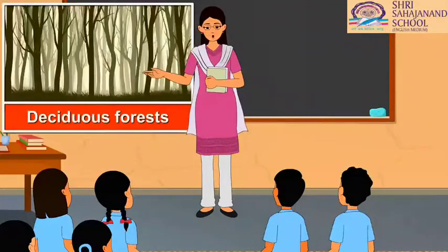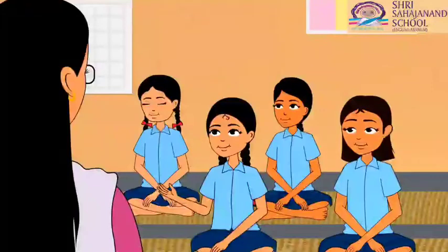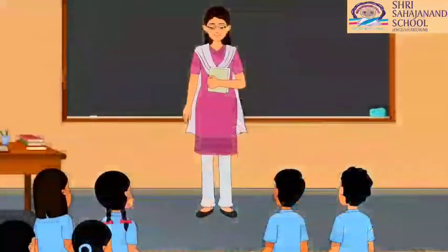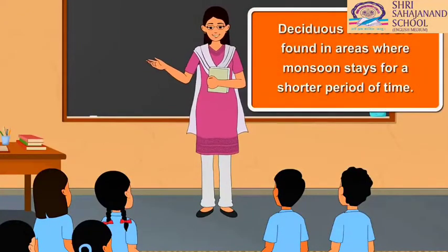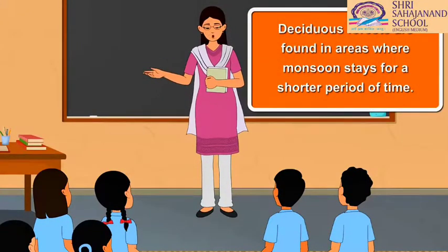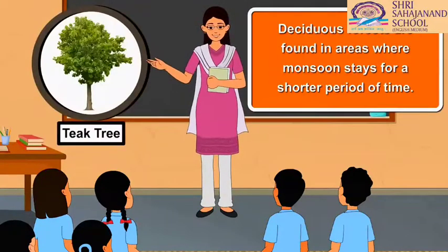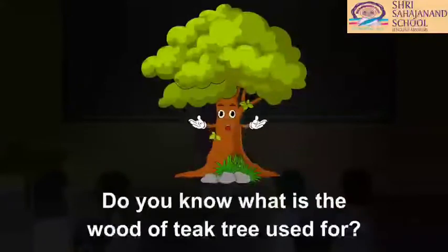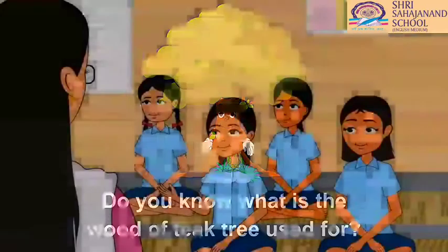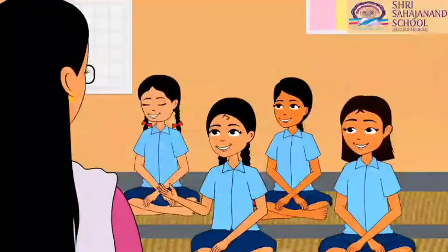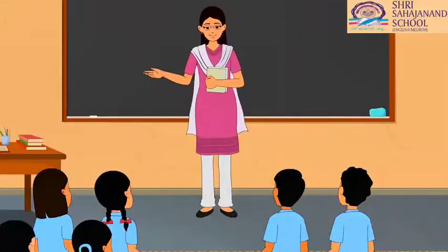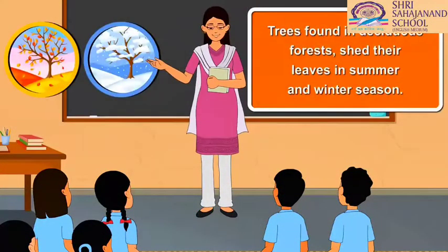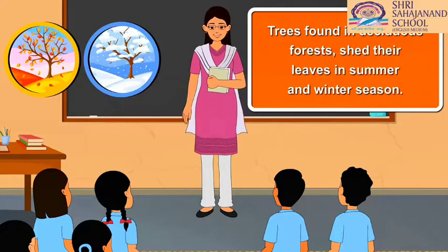Now tell me about deciduous forests. As the name suggests, the trees might be shedding their leaves. Absolutely correct. They are found in areas where monsoon stays for a shorter period of time. Most of the teak trees are found here. Children, do you know what the wood of teak tree is used for? When do these trees shed their leaves? Trees found here shed their leaves in summer and winter season. The new leaves grow in the months of March and April.